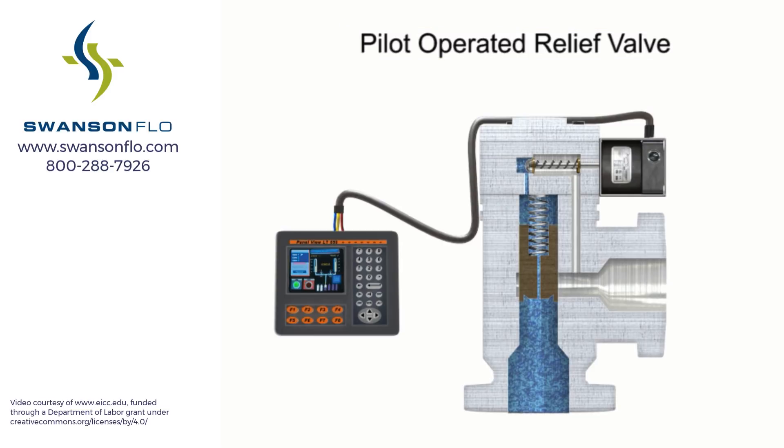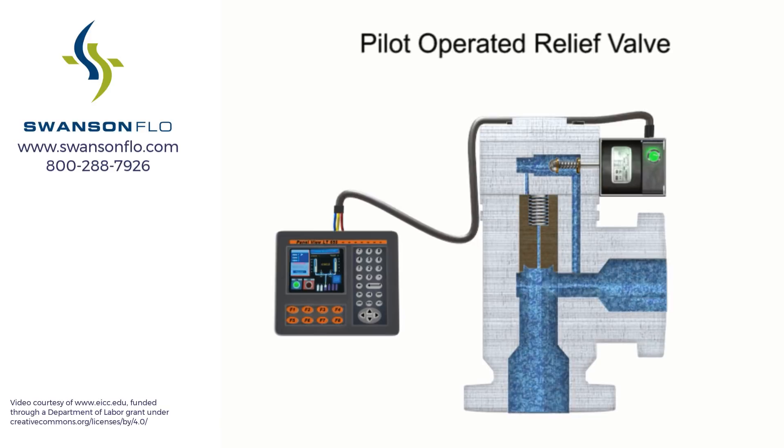When the solenoid is energized, the core opens the pilot orifice and relieves pressure from the top of the valve piston, or diaphragm, to the outlet side of the valve. This results in an unbalanced pressure, lifting the piston, or diaphragm, off the main orifice.